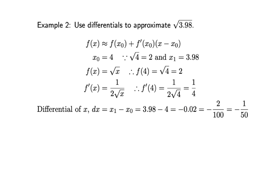dx = x₁ − x₀ = 3.98 − 4 = −0.02. Since 0.02 = 2/100, dx = −1/50.